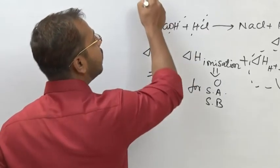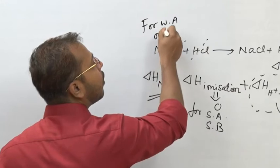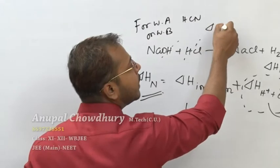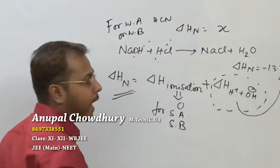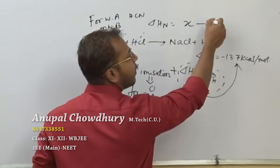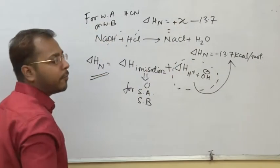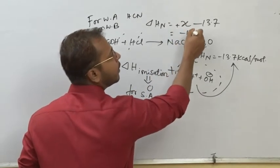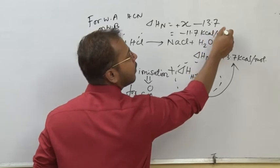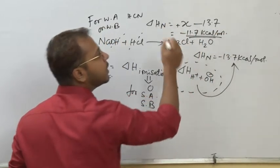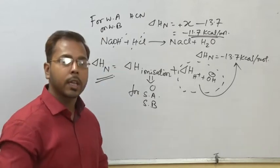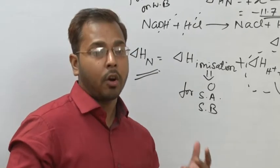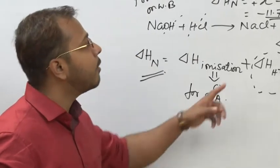For a weak acid like HCN, if the ionization heat required is x kilocalorie per mole, and the standard neutralization value is minus 13.7, then if x equals 2, the observed heat of neutralization will be minus 11.7 kilocalorie per mole. If x equals 3, it will be minus 10.7 kilocalorie per mole.